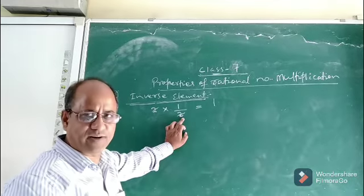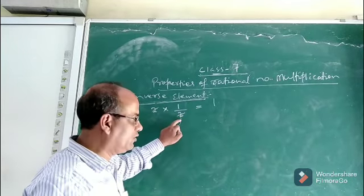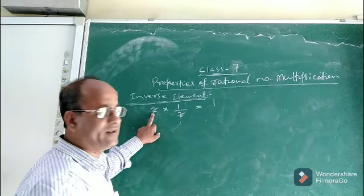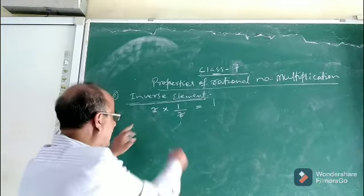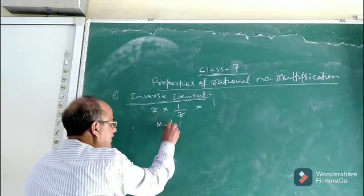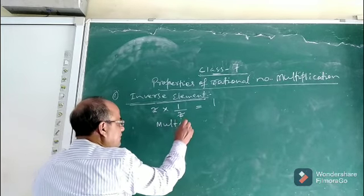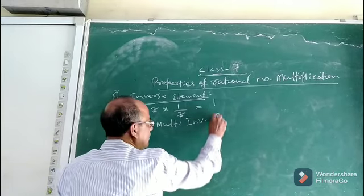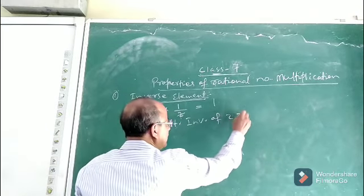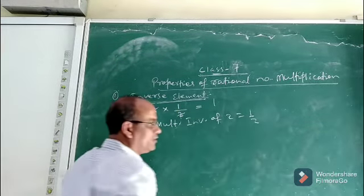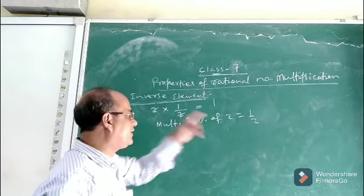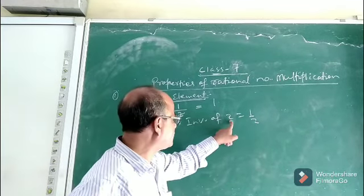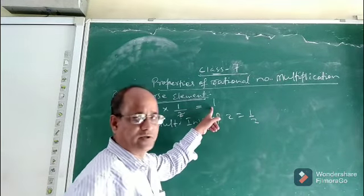That means, children, 1/2 is the multiplicative inverse of 2. Multiplicative inverse of 2 equals 1/2. Why? Because 2 into 1/2 is 1.